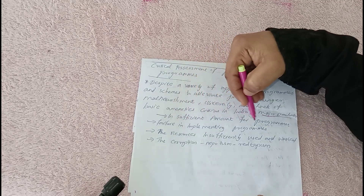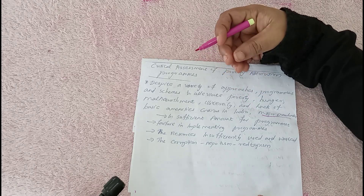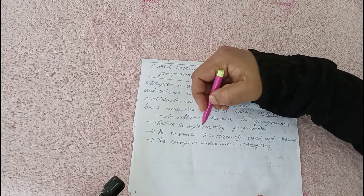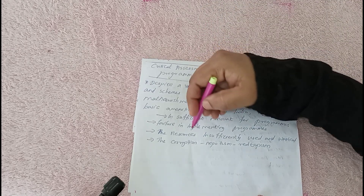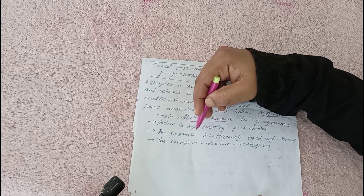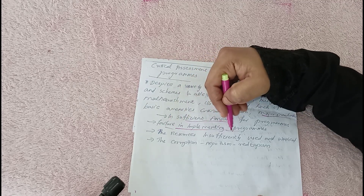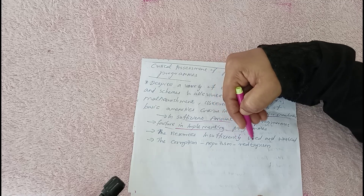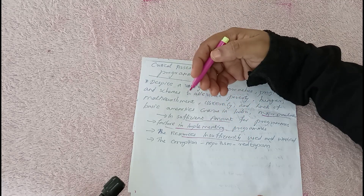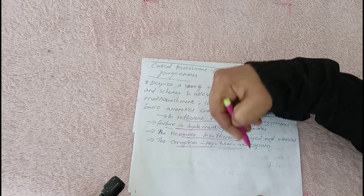A critical assessment of poverty alleviation programs reveals several shortcomings. First, there is an insufficient amount of funds allocated to programs. Second, there is failure in implementing the programs properly. Third, resources are insufficient and often wasted. Fourth, there is corruption, nepotism, and other malpractices that undermine the effectiveness of these programs.